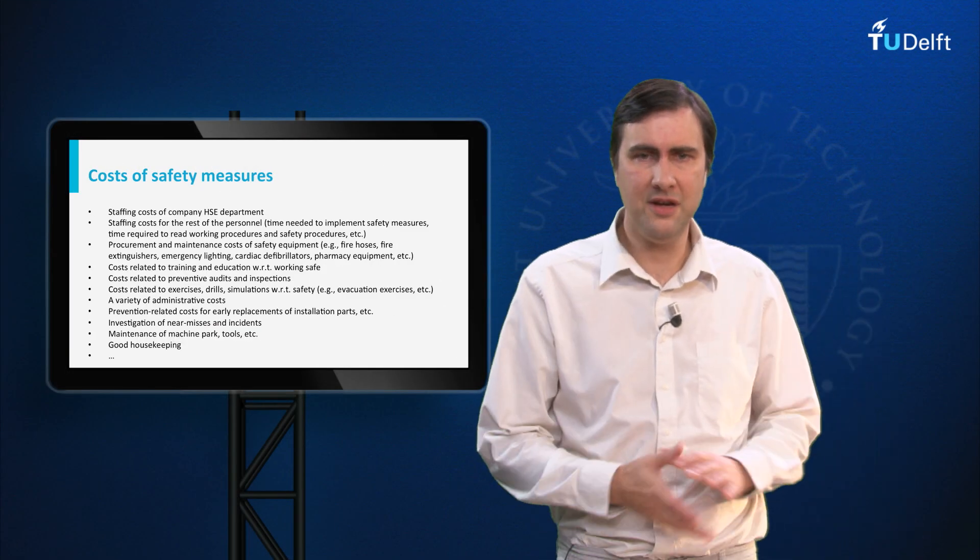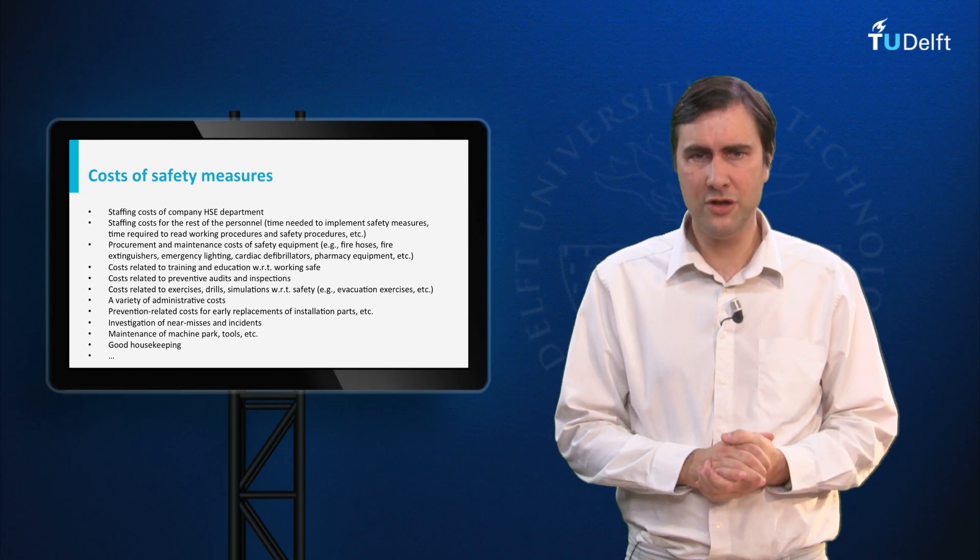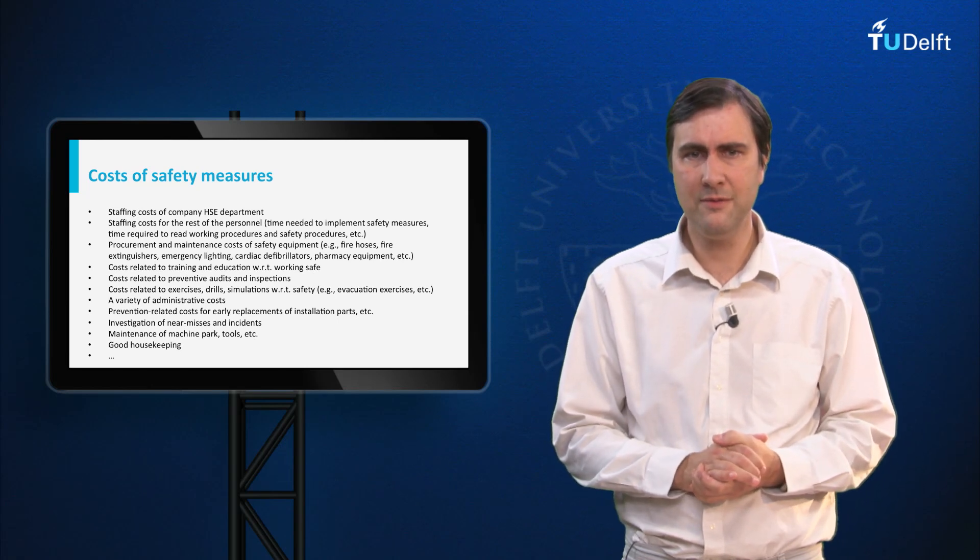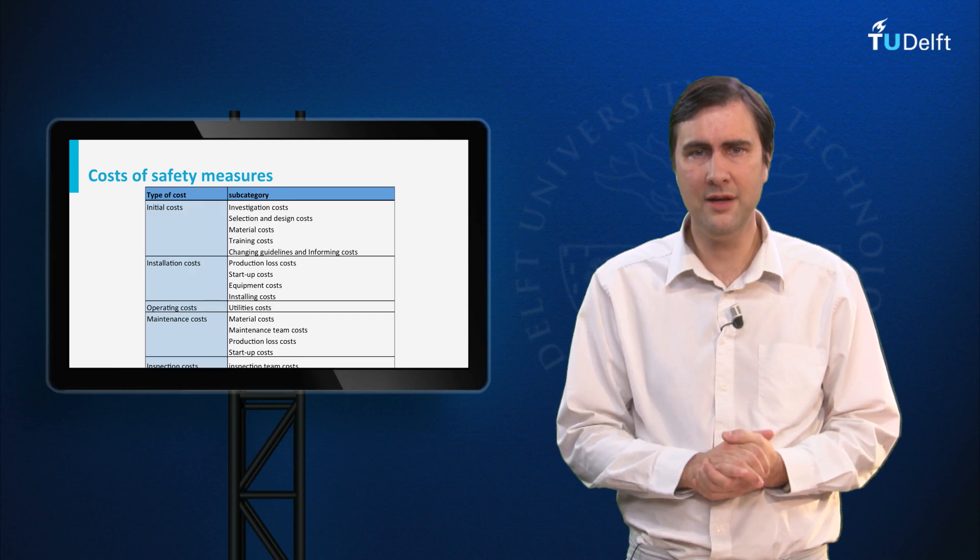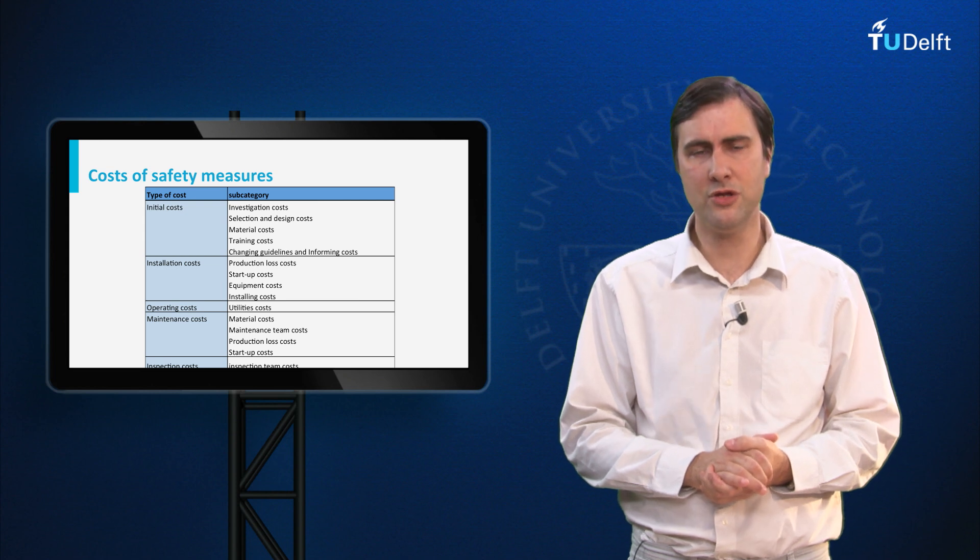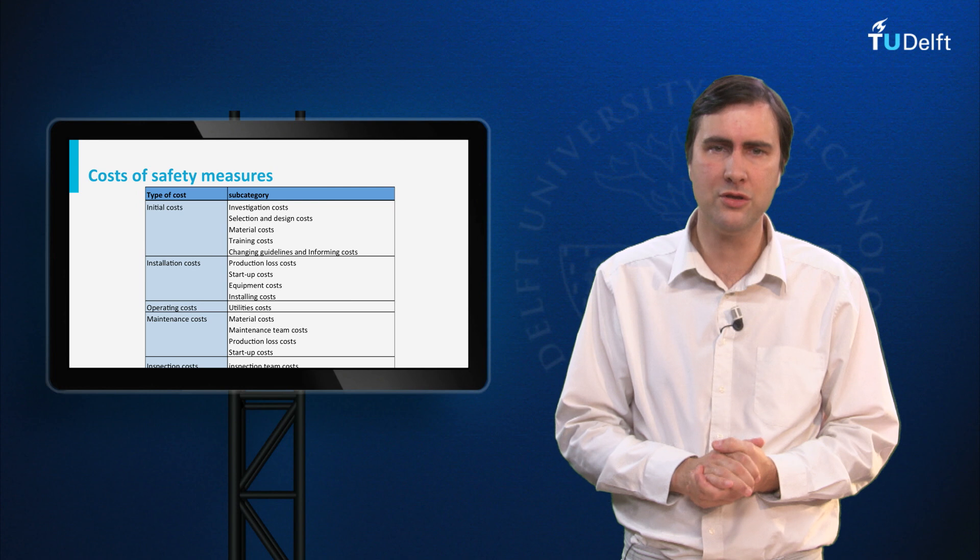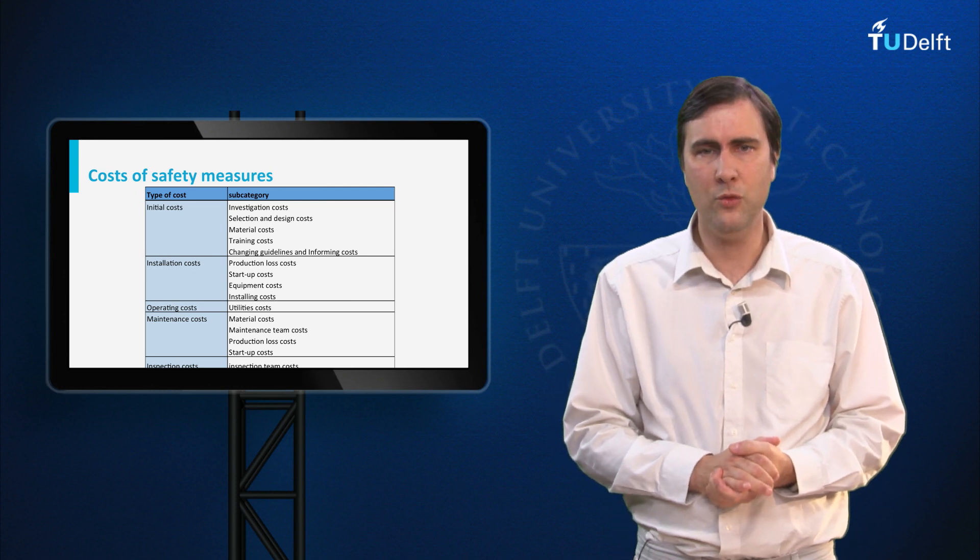Fourth are the costs of safety measures. One can distinguish a great variety of costs associated with the safety investment, as you can see on the slide. We may conveniently classify them into a few clear categories, for example initial costs, installation costs, operating costs, maintenance costs, inspection costs and what have you.